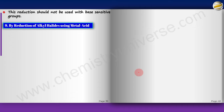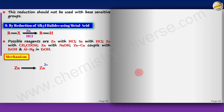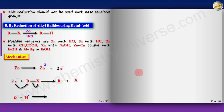The next method is reduction of alkyl halides using metal/acid combinations: Zn/HCl, Sn/HCl, Zn/acetic acid, Zn/NaOH, Zn–Cu couple/EtOH, or Al–Hg/EtOH. The mechanism is simple: zinc is oxidized, attacks RX to form R⁻, and R⁻ then takes H⁺ from HCl to form RH.